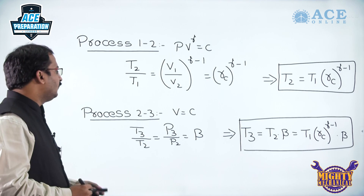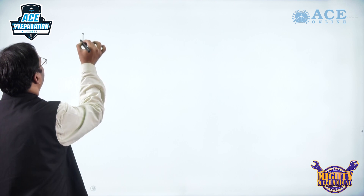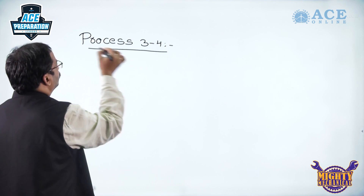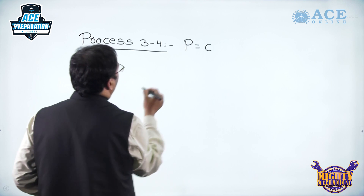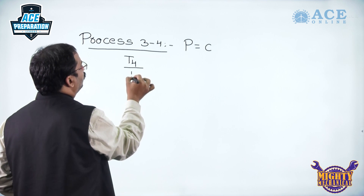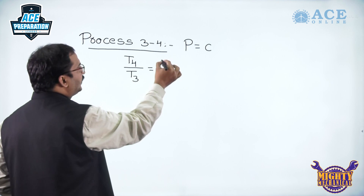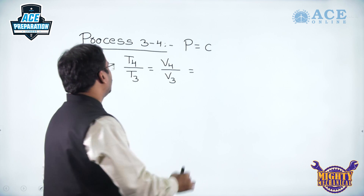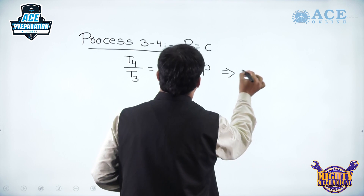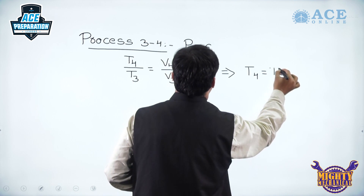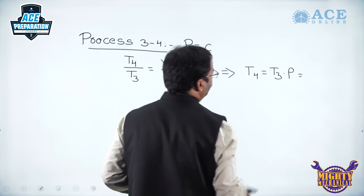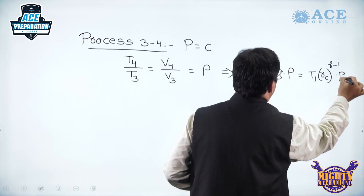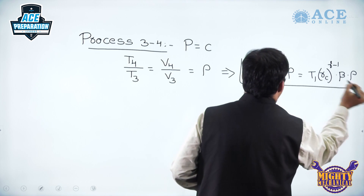For process 3 to 4 (constant pressure), temperature is directly proportional to volume, so T4/T3 = V4/V3 = ρ. Therefore T4 = T3 · ρ = T1 · R_C^(γ−1) · β · ρ.